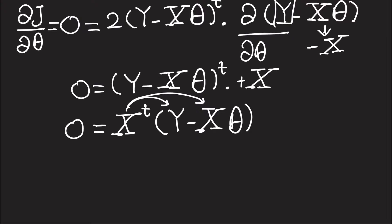And I'm going to be using this X from now on. So we're going to have 0 equals X transpose Y minus X transpose X theta. Then we're going to take X transpose X theta to this side, so we get X transpose X theta is equal to X transpose Y.